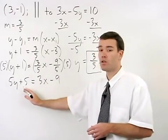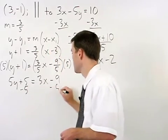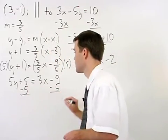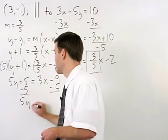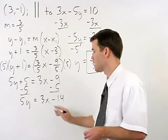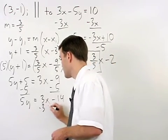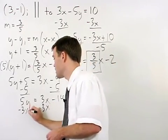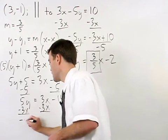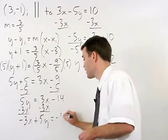Next, move the number to the right side by subtracting 5 from both sides to get 5y equals 3x minus 14. Next, move your x term to the left by subtracting 3x from both sides to get negative 3x plus 5y equals negative 14.